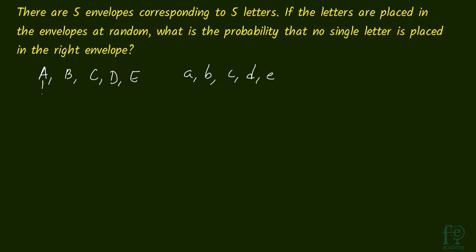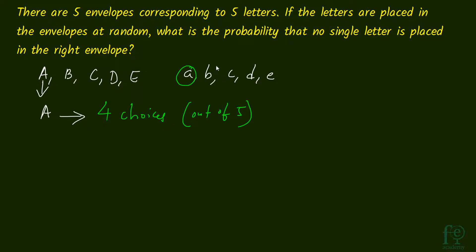Consider letter A. For letter A, how many choices are there? Letter A should not go to envelope A because envelope A is the right envelope — it should go to a wrong envelope. So there are 4 choices for letter A out of 5. It can go to either B, C, D, or E.